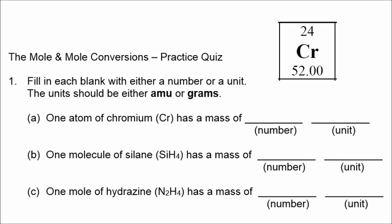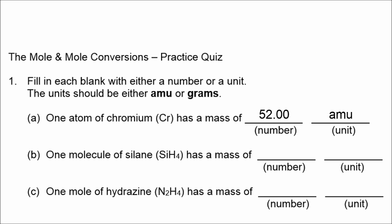We start with one atom of chromium. The periodic table tells us that the atomic mass is 52.00, so that's our number. And the unit has to be AMU because we are referring to a single atom of chromium that's very small. Atoms and molecules are measured in AMUs.